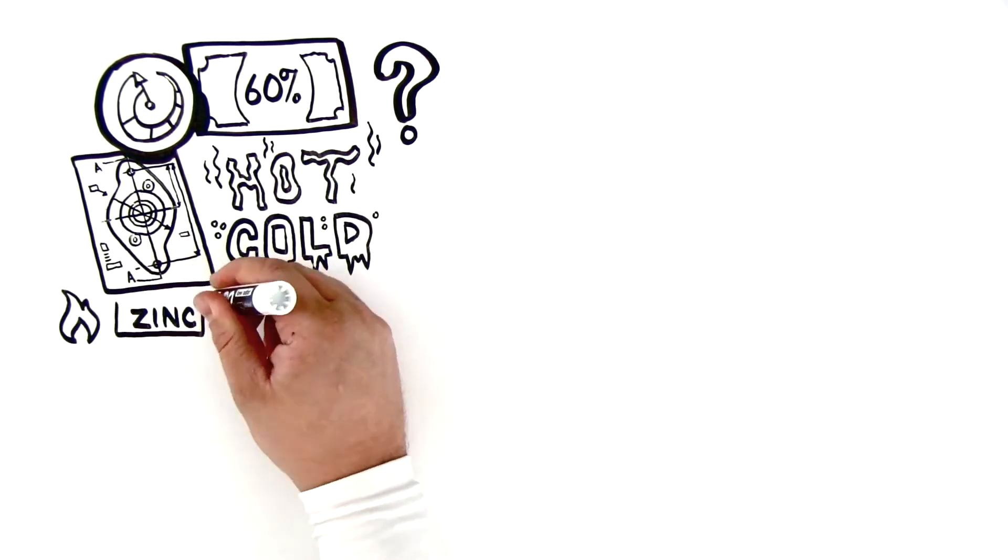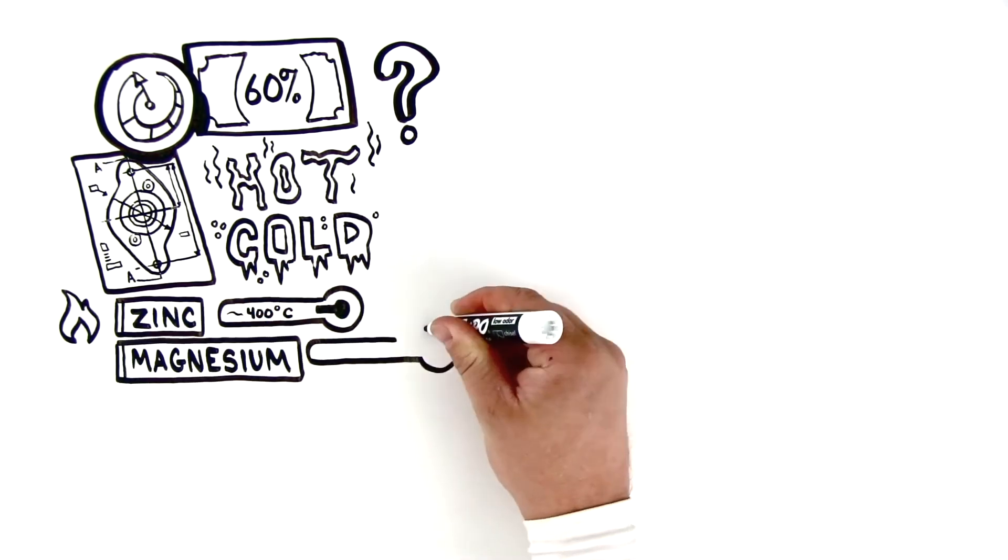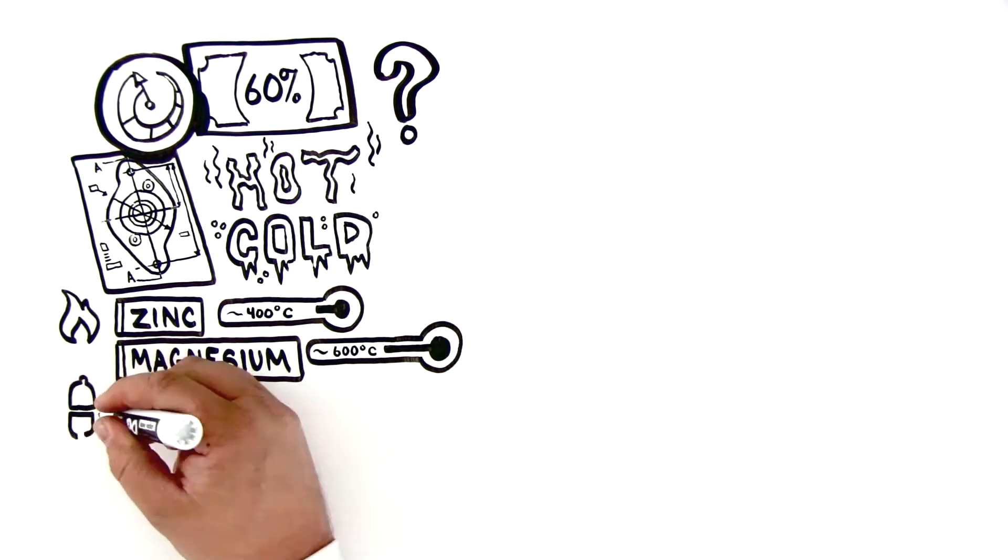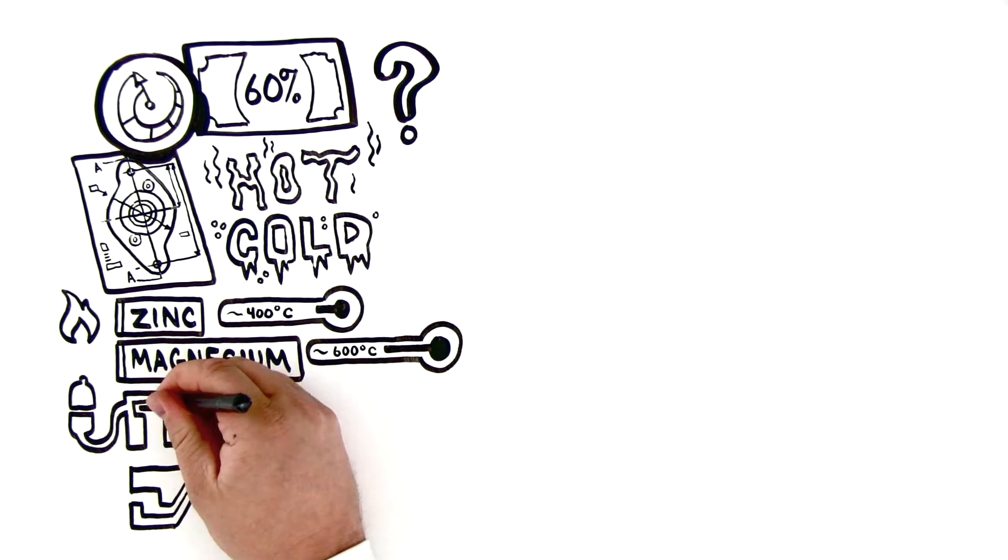Hot chamber die casting is ideal for alloys with relatively low melting points, like zinc and magnesium. These metals are also steel-friendly, so we can inject molten metal into the die directly from the melting pot.